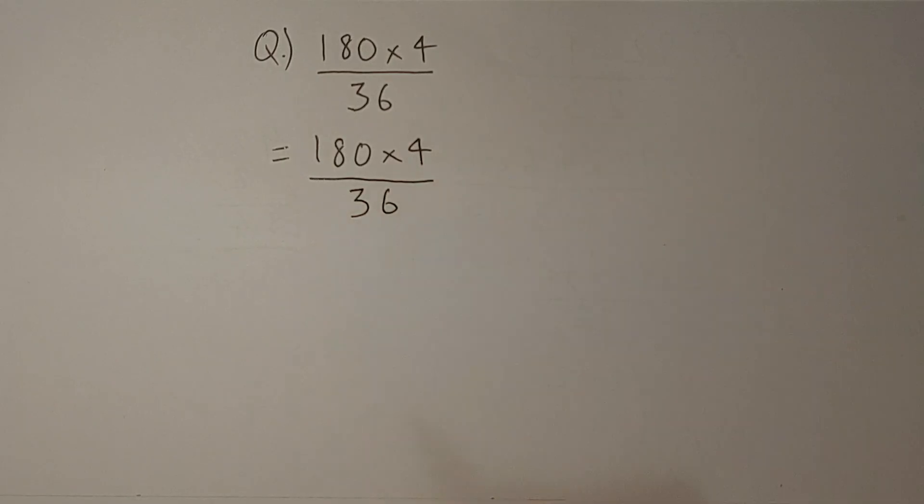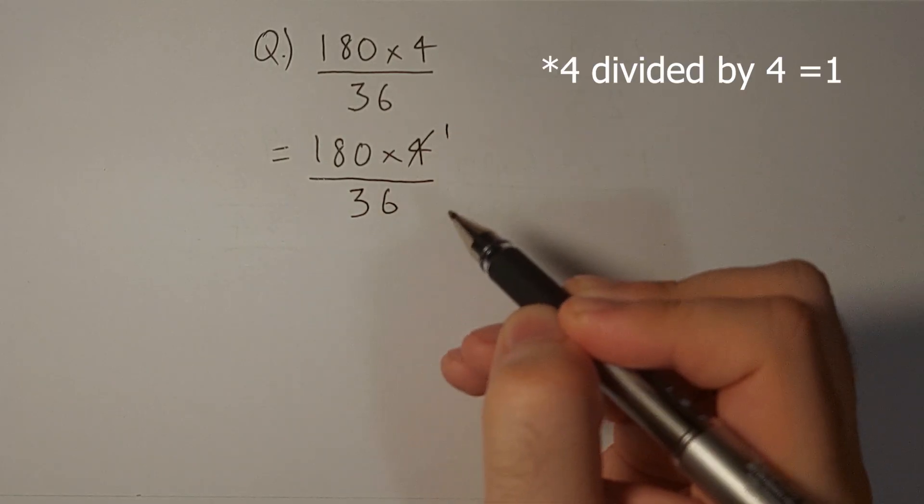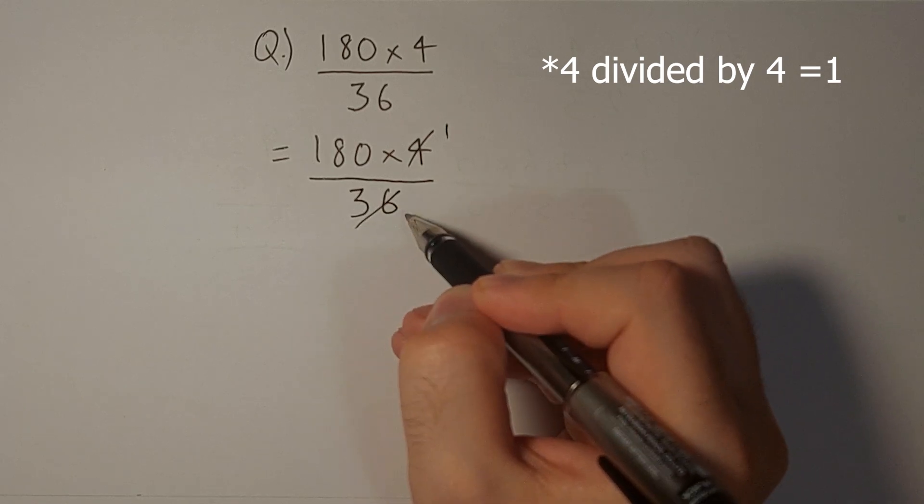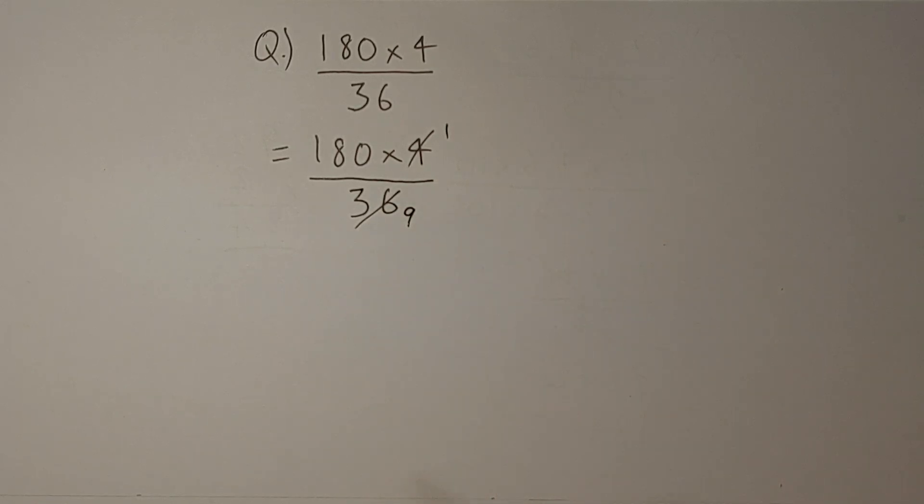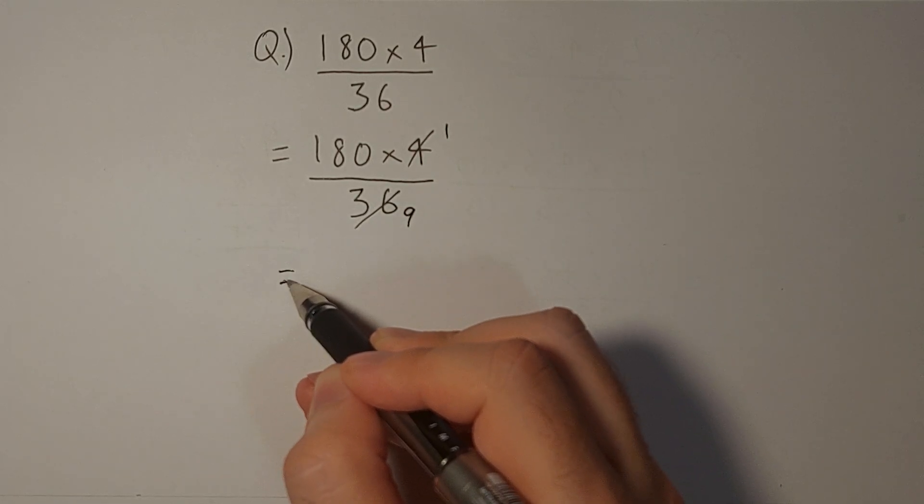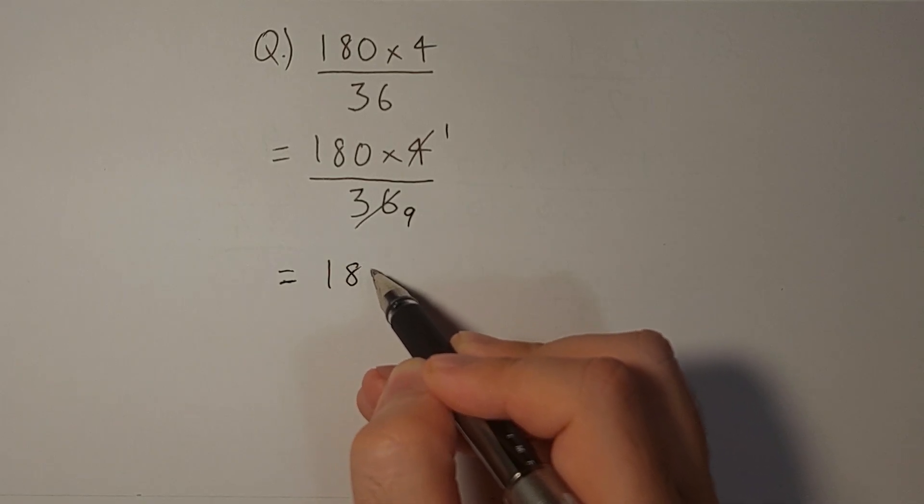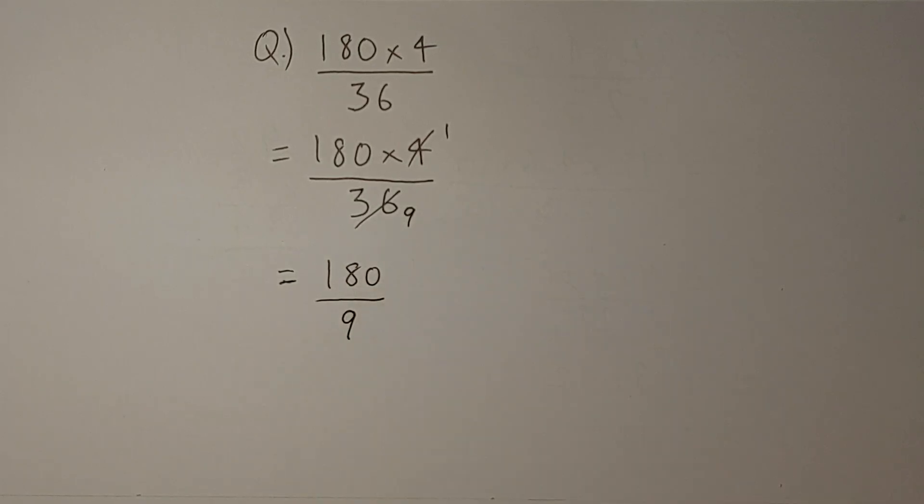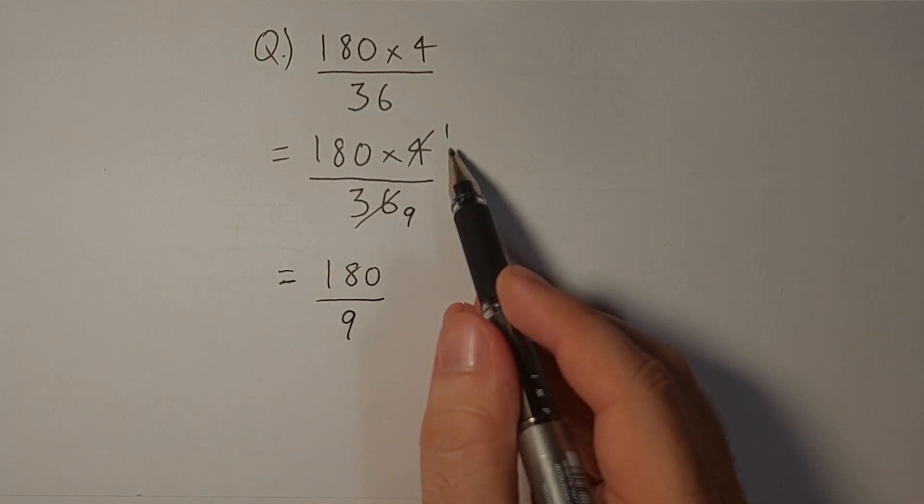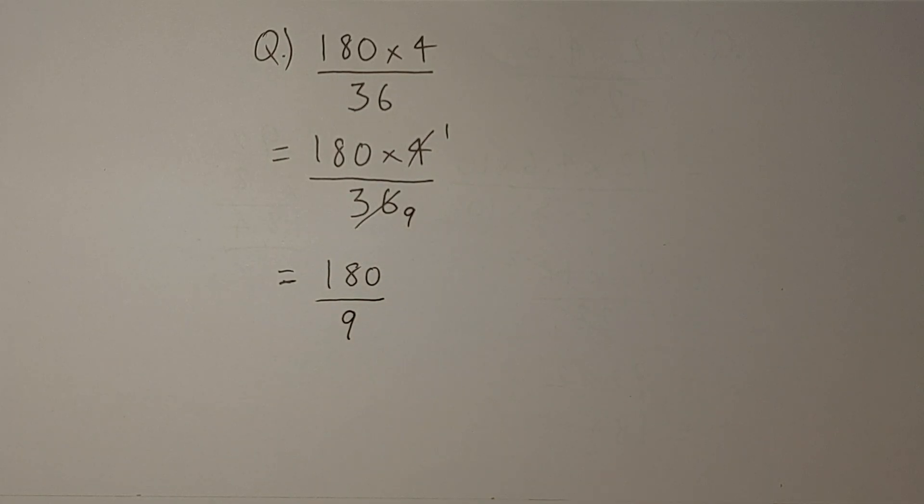So we can simplify: 4 divided by 4 is 1 and 36 divided by 4 is 9. So this becomes 180 by 9, because 180 times 1 is 180 divided by 9. And 180 divided by 9 is 20. So the answer to this question is 20.